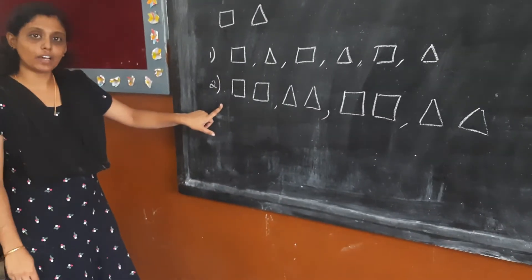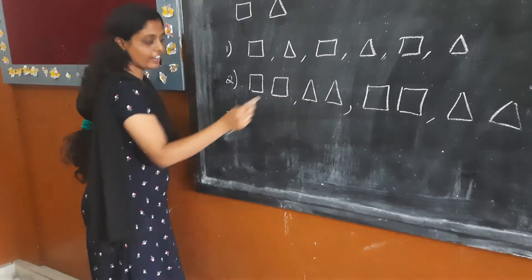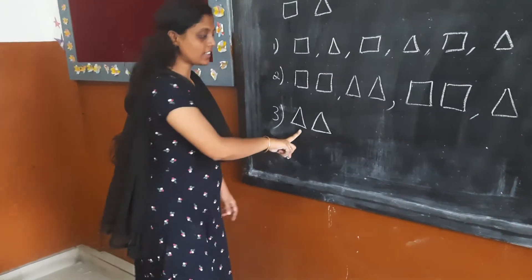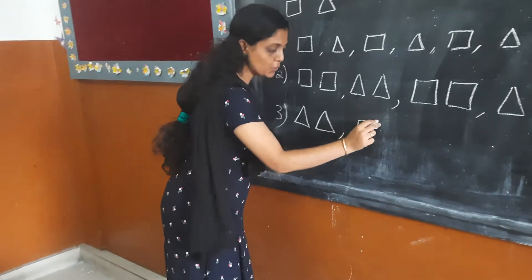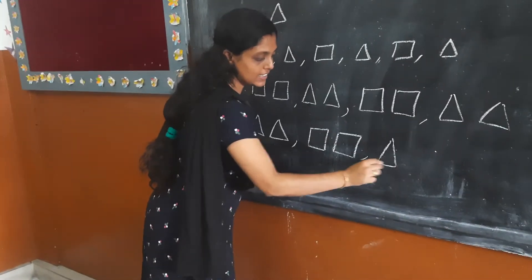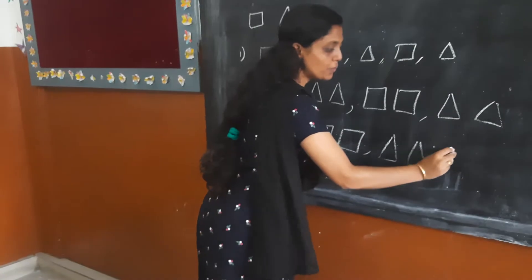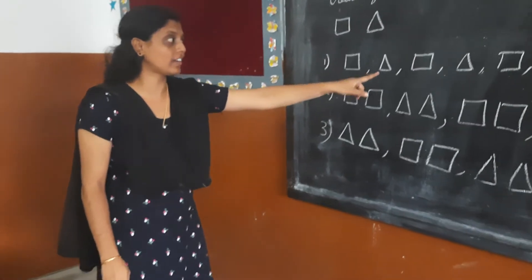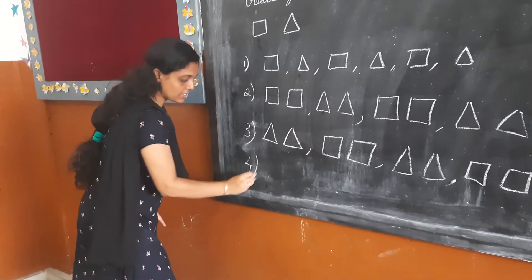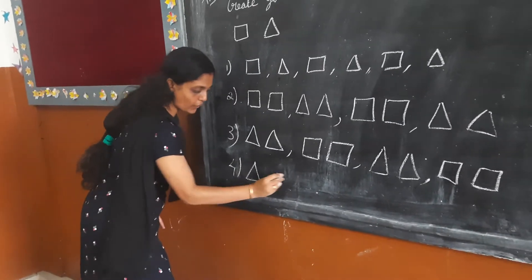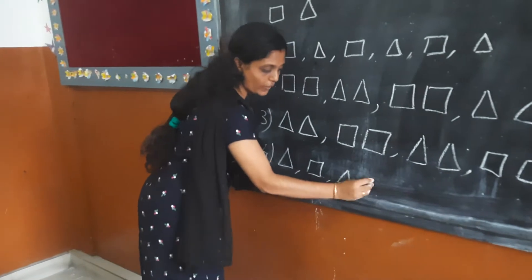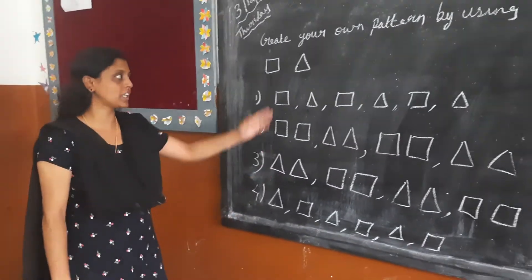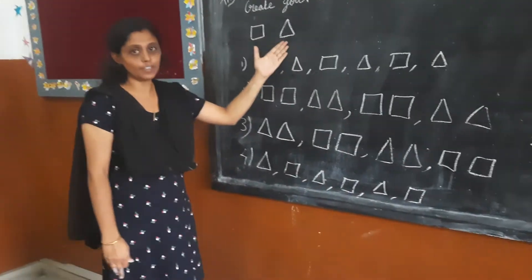So what pattern will come next? Here we can create a pattern like two triangles and two squares. And we can also create a pattern like a triangle, a square. The fourth pattern is: a triangle, a square, a triangle, a square, a triangle, again a square. These are all the patterns we can create by using these two shapes — square and a triangle.